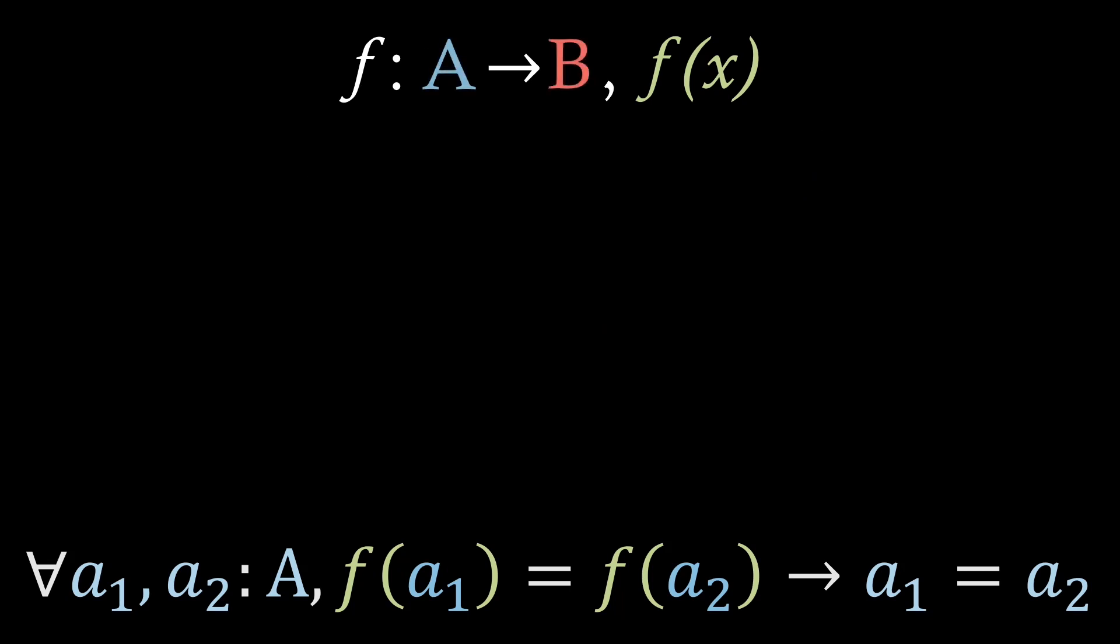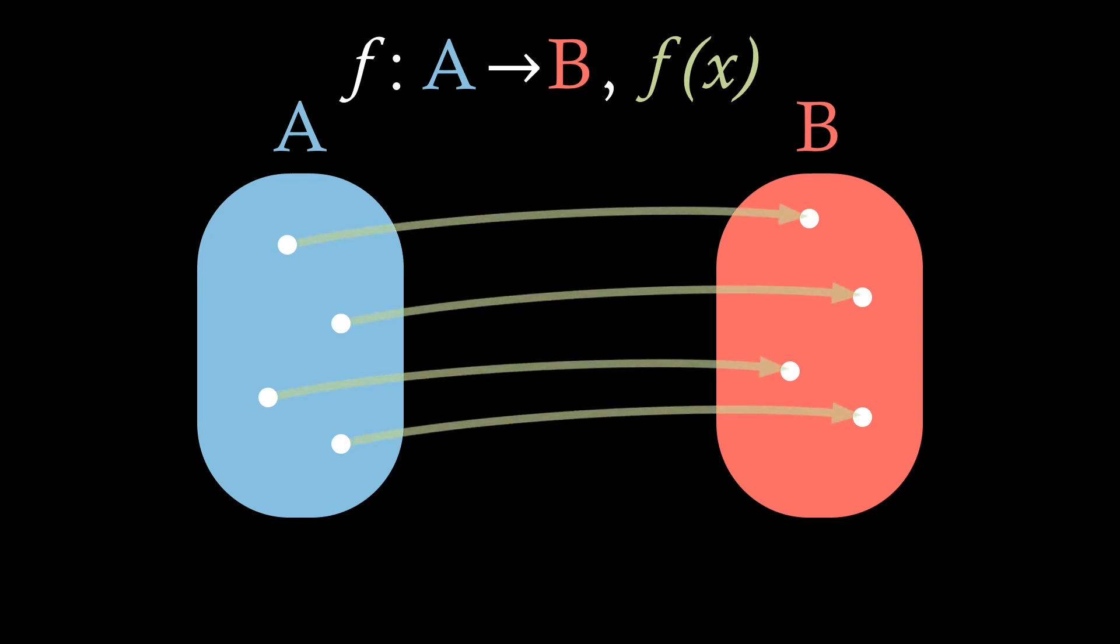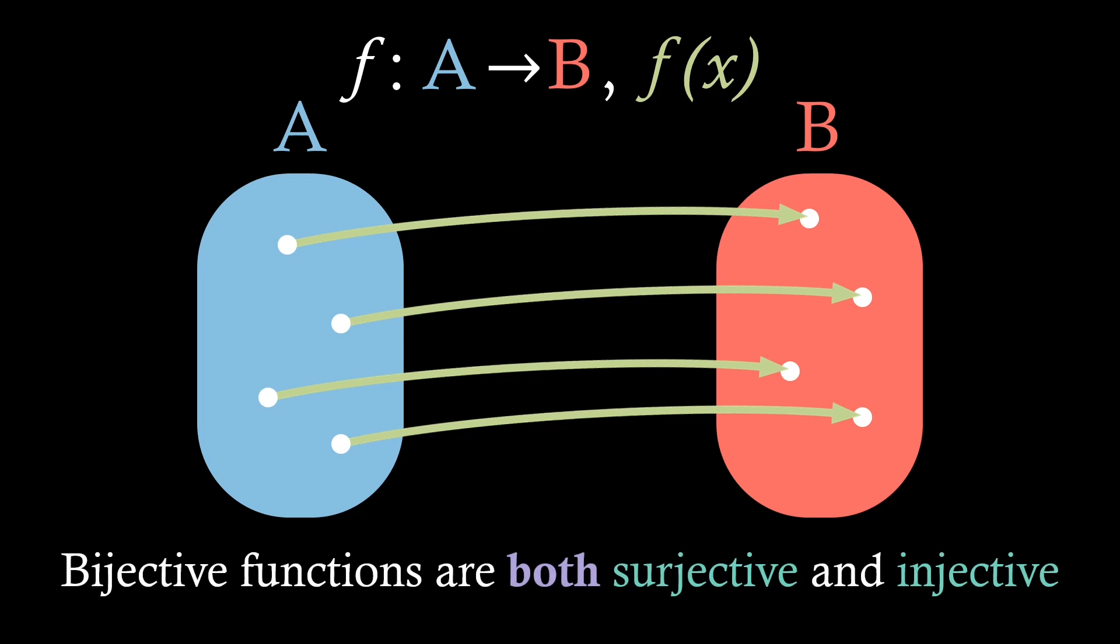Once again, returning back to our function diagram, we now consider the case where every single point in the domain maps to an individual point on the codomain, and every individual point in the codomain is mapped to by an individual point in the domain, which is the case when a function is both surjective and injective, then we call this a function being bijective.